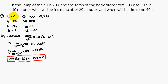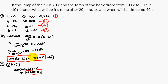Now we apply the first initial condition: theta equal to 100 at t equal to 0. Substituting these values — t equal to 0 and theta equal to 100 — we get log(100 minus 20), so C is equal to log 80.